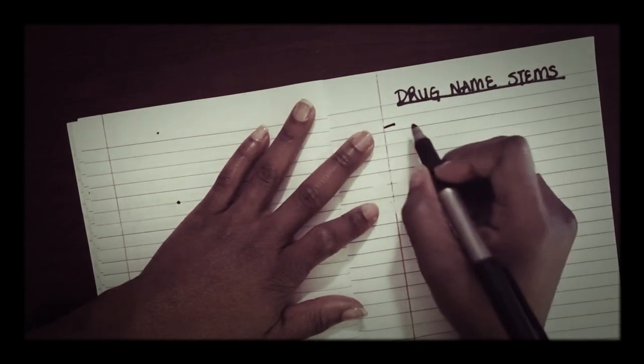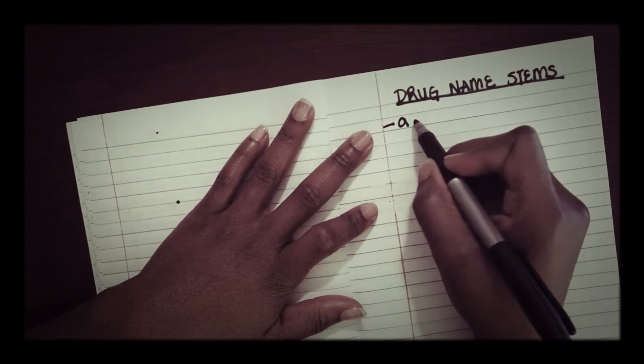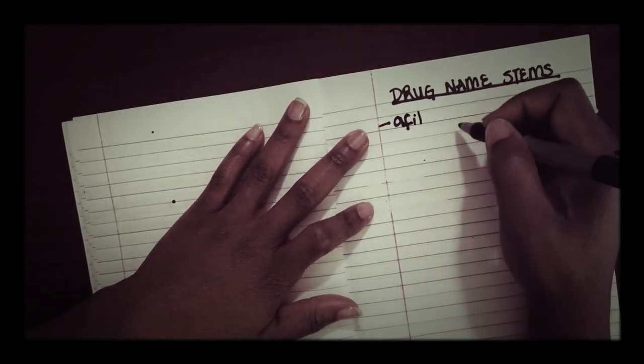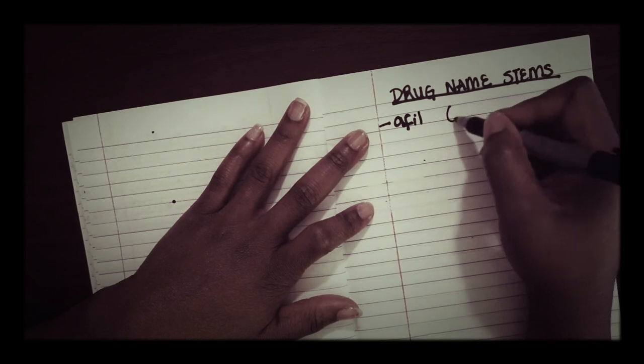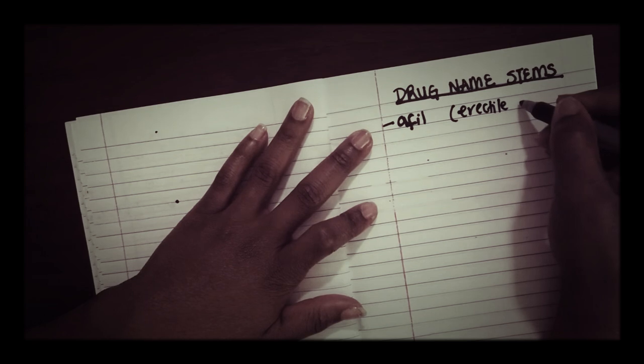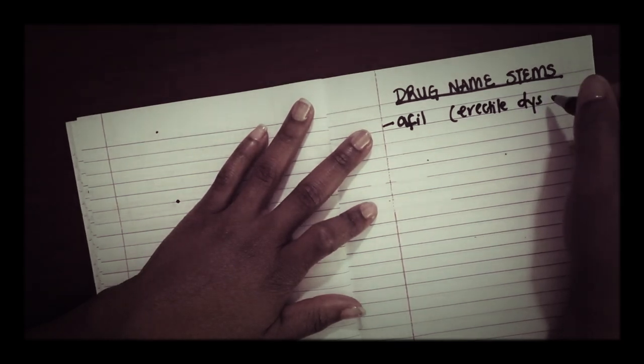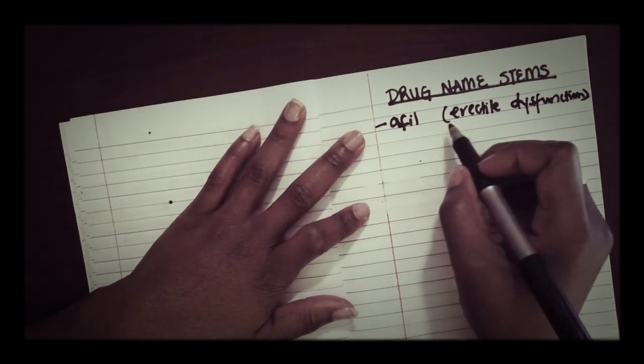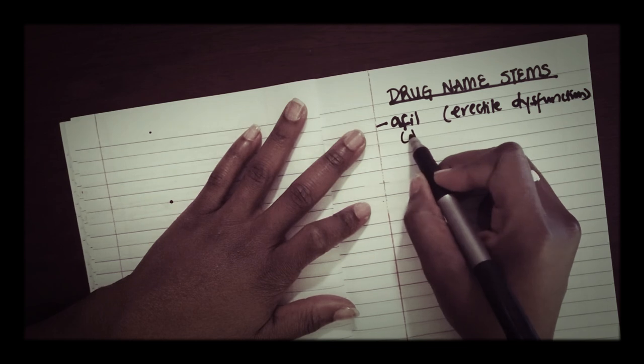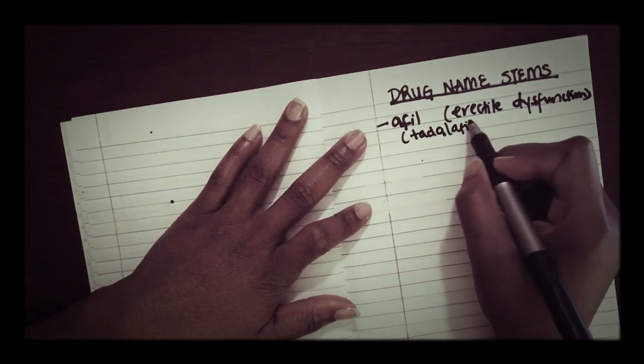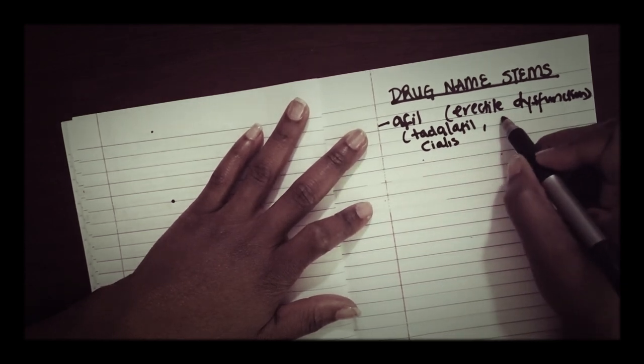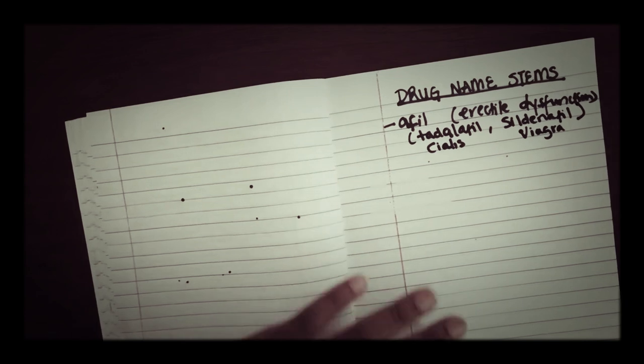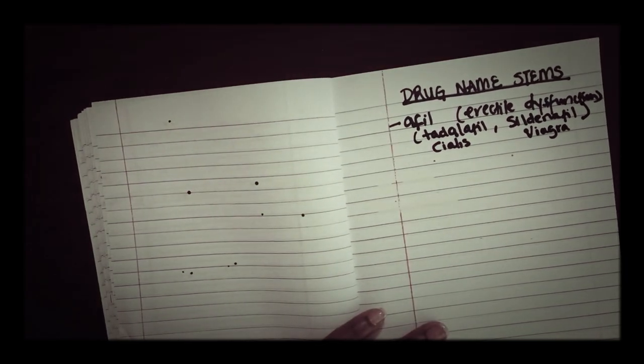We have drugs that end in -afil. These are drugs that are used to treat erectile dysfunction. Drugs such as Viagra with the generic name sildenafil, Cialis which is tadalafil. So if you just remember these suffixes, then it's a way to bring it all together.